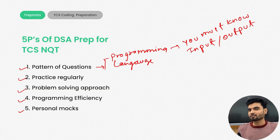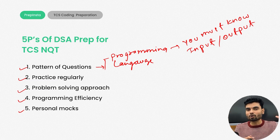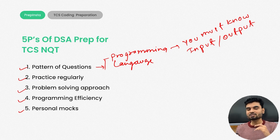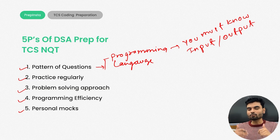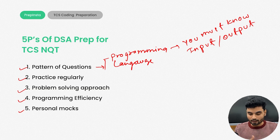Second thing: do not use external libraries. Use inbuilt methods or your own logic. If a particular problem can be directly solved with a built-in method, do not do that — use your own logic. Otherwise, the interviewer will think you haven't applied any thinking. For example, if a problem is about sorting and you just call the inbuilt sort method, that will never be helpful — because interviewers want to check your problem-solving skills.